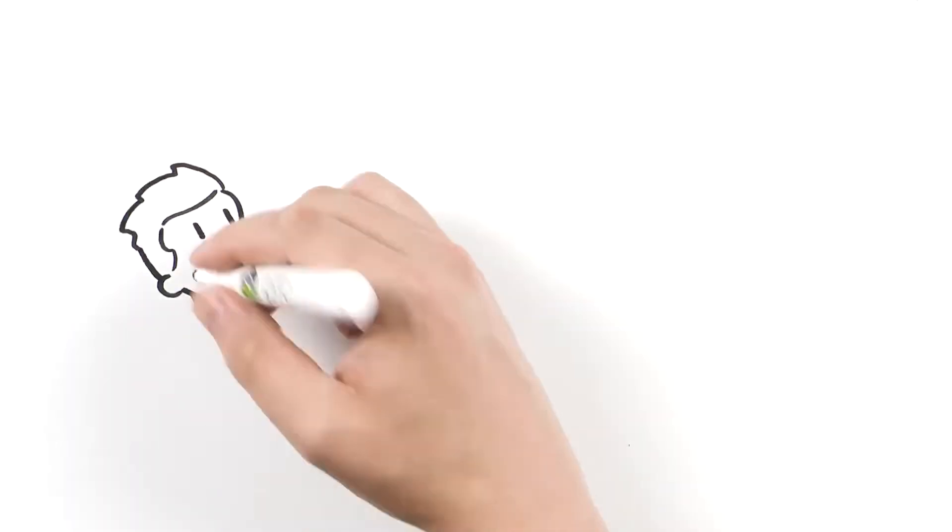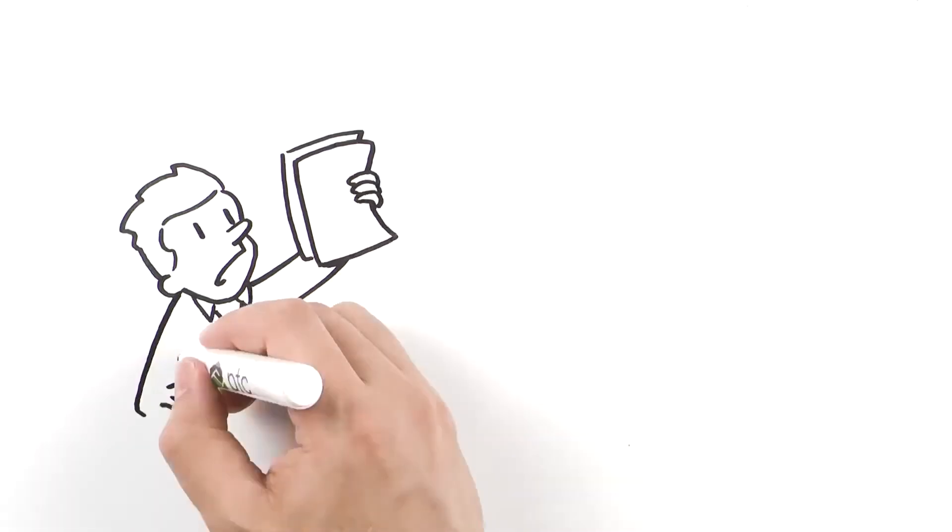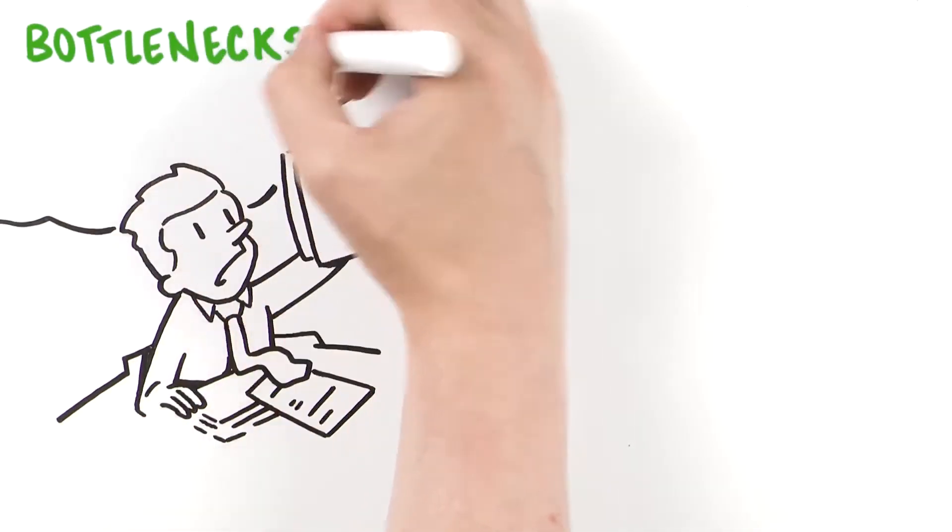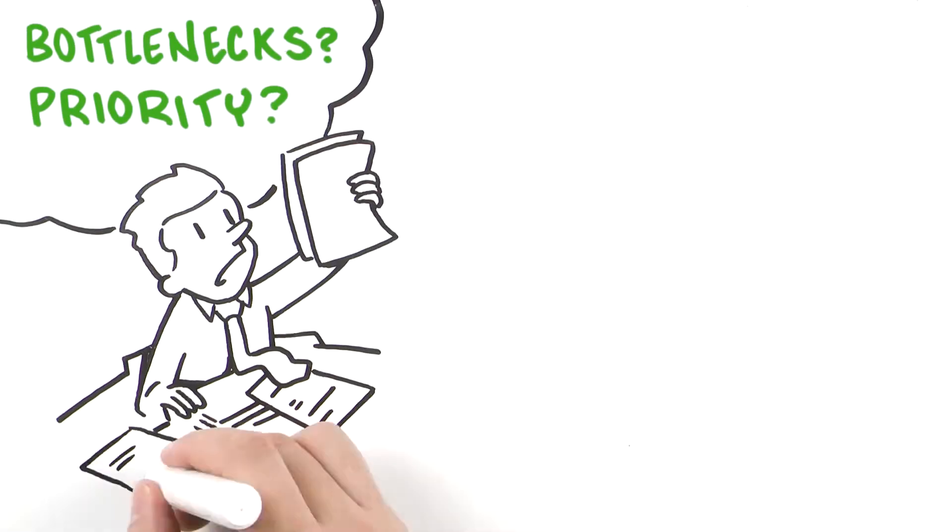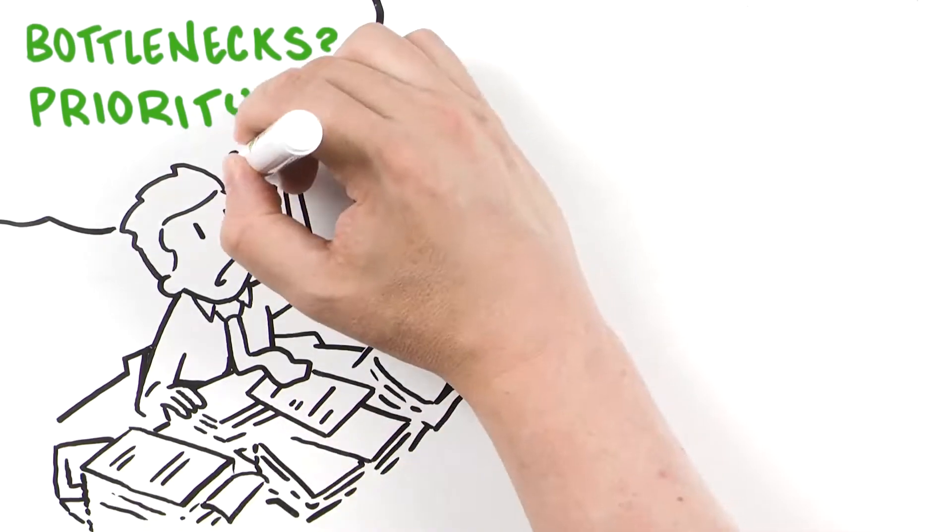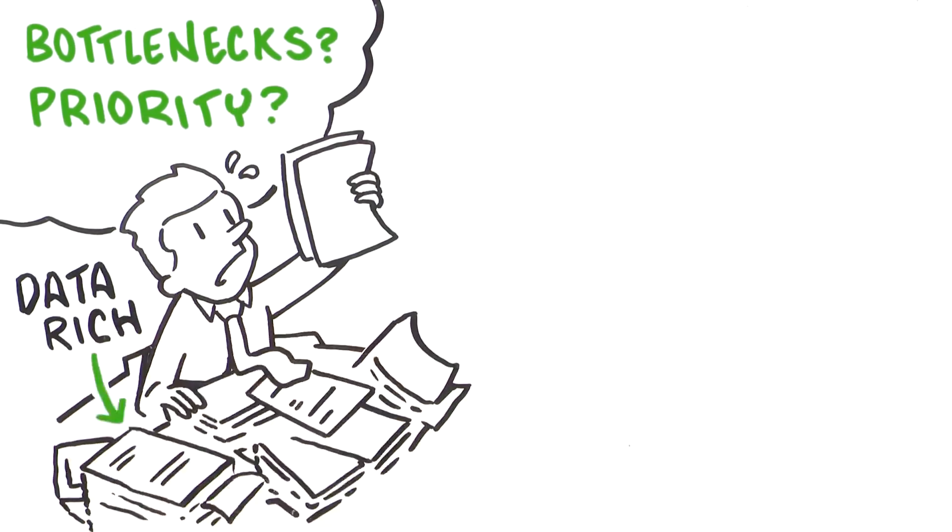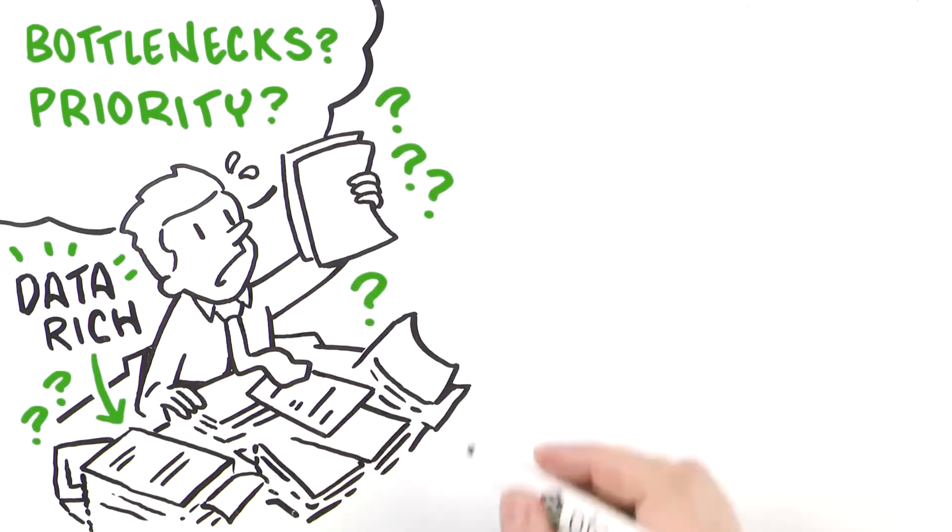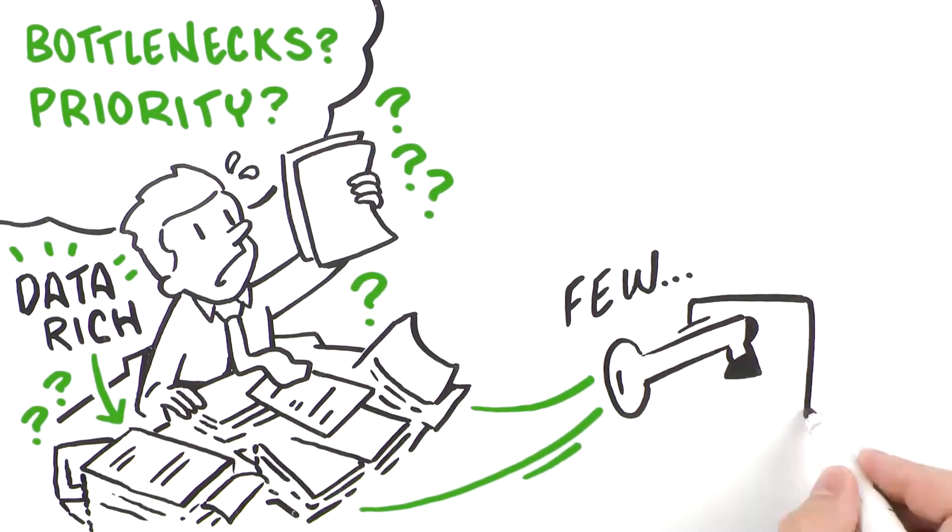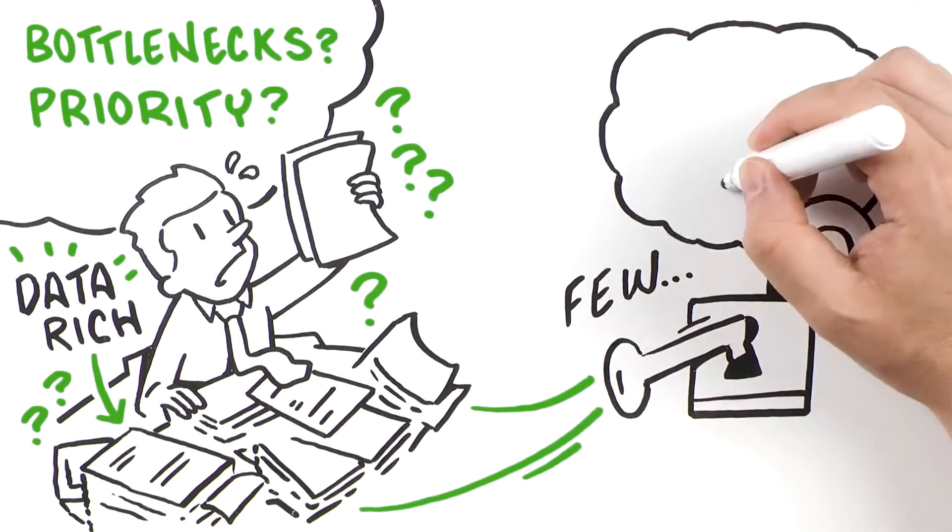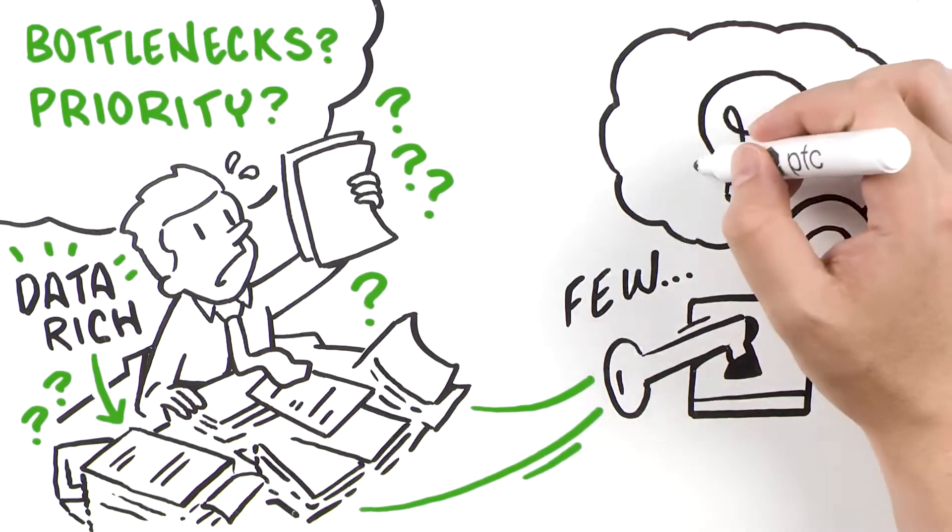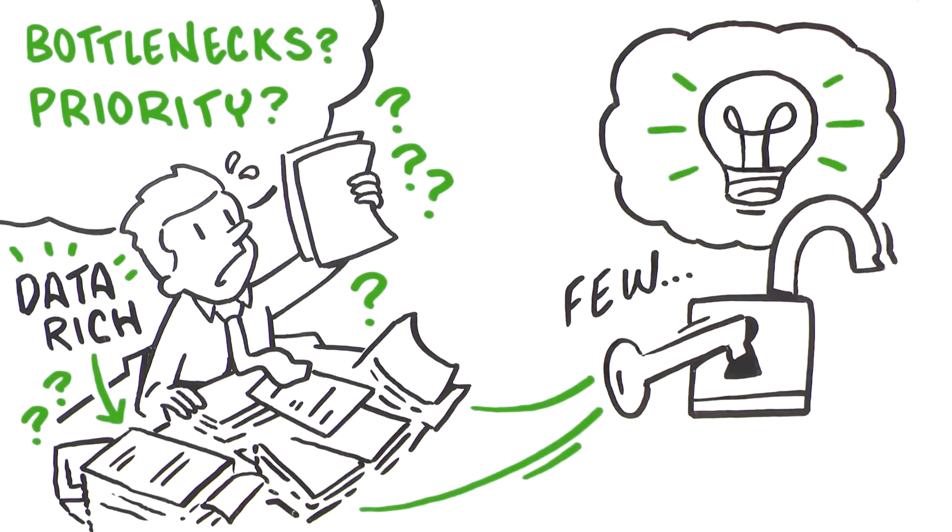Today, when it comes to continuous improvement and performance management, identifying bottlenecks and their relative priority to one another is a highly manual and challenging process. Companies are often data-rich, but insights poor. Very few have unlocked the data necessary to analyze the most pressing performance issues and root causes required for transformational improvement.